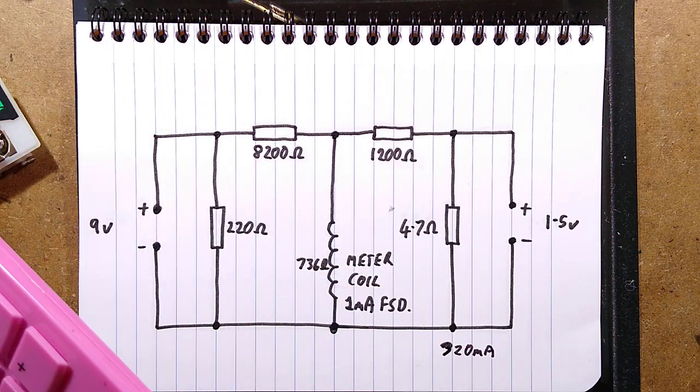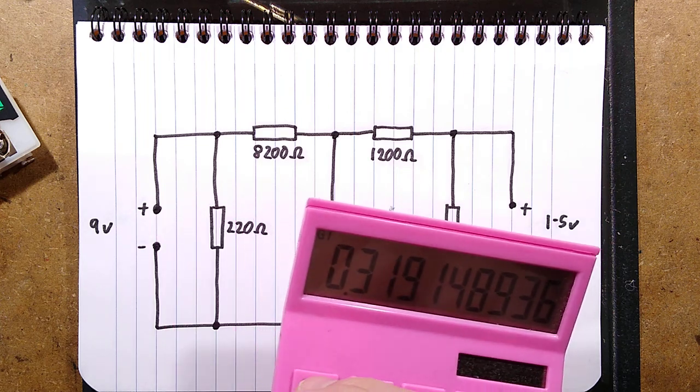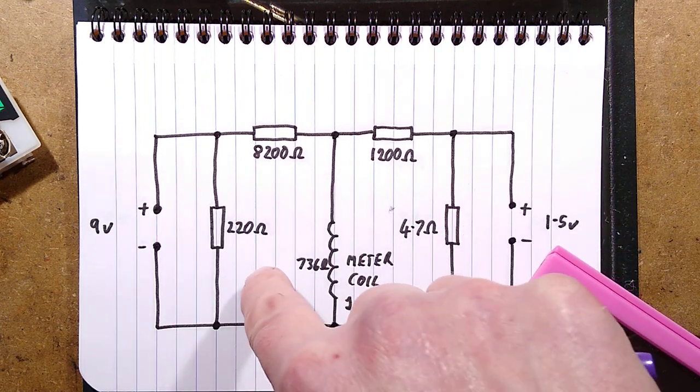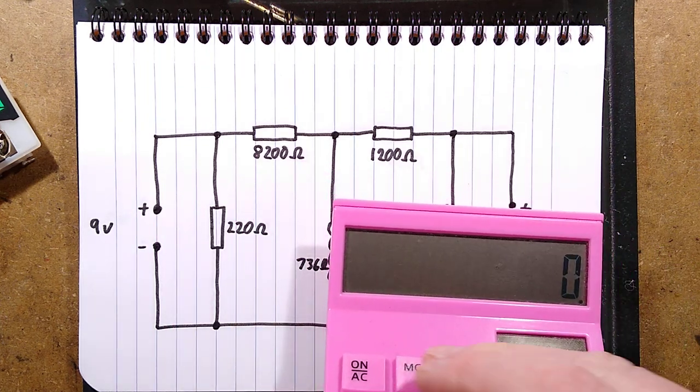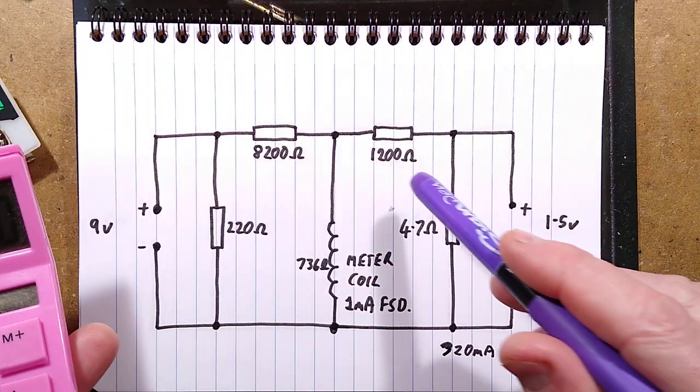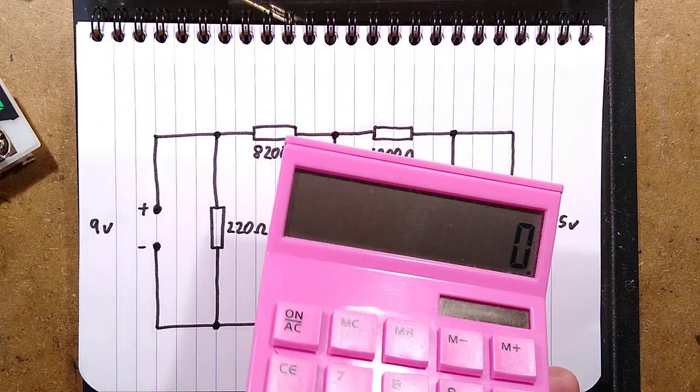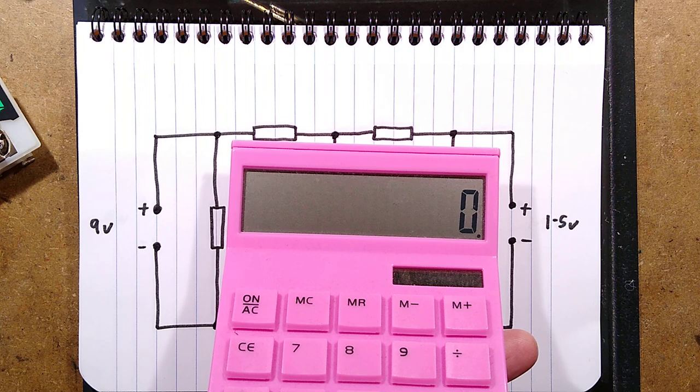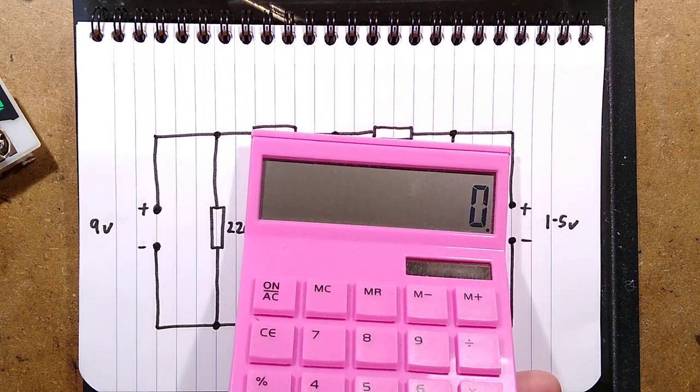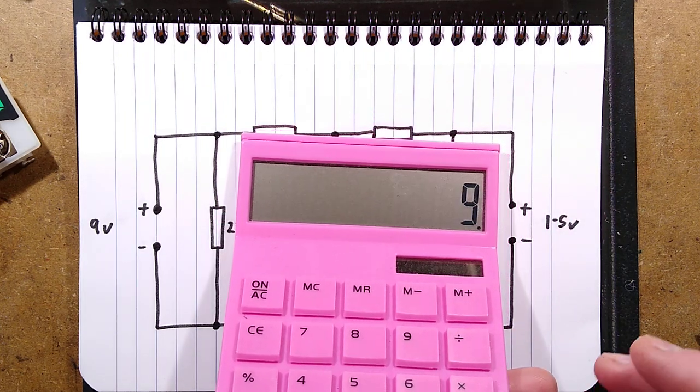It's going to be a lot less for the 9 volt battery. Let's do the maths for that. So it's got a 220 ohm resistor across it. So excluding the 1 milliamp that's going to pass through the meter, it's going to be I equals V, which is going to be 9 volts for a fully charged battery,